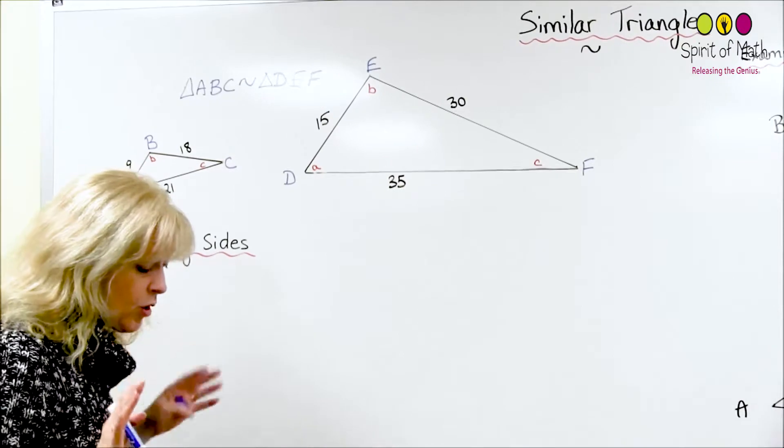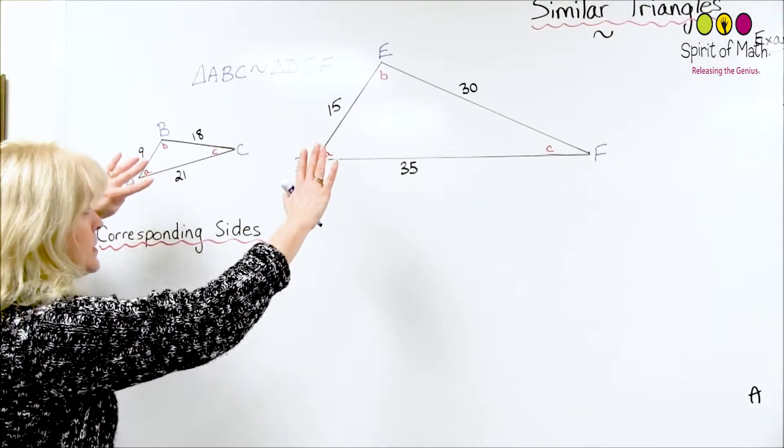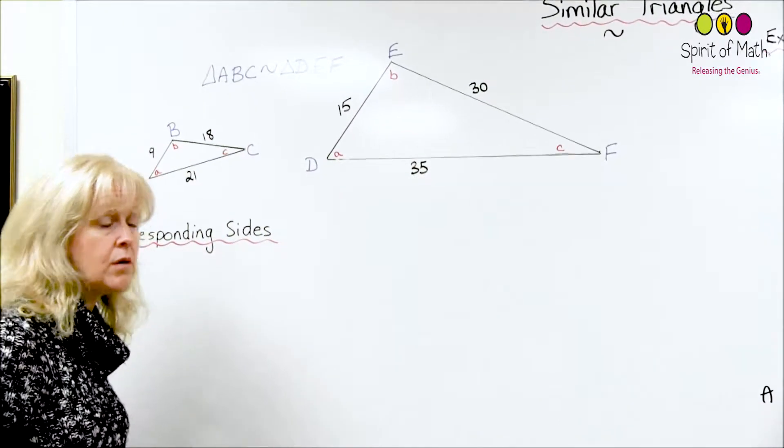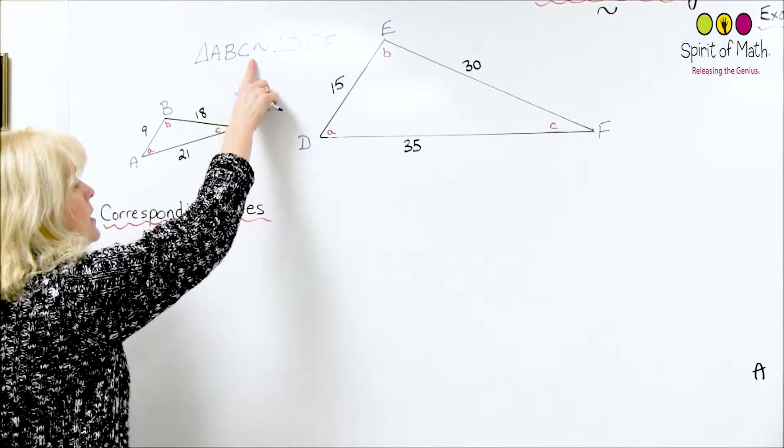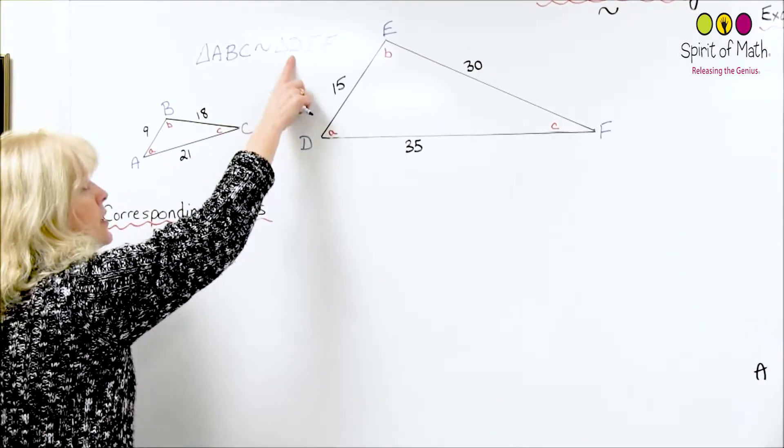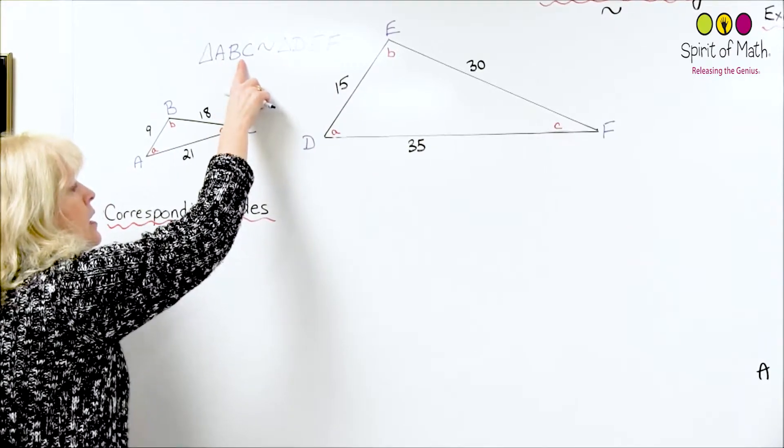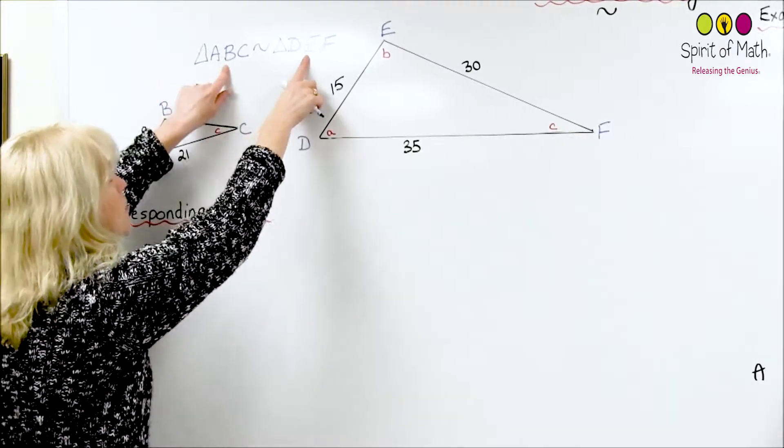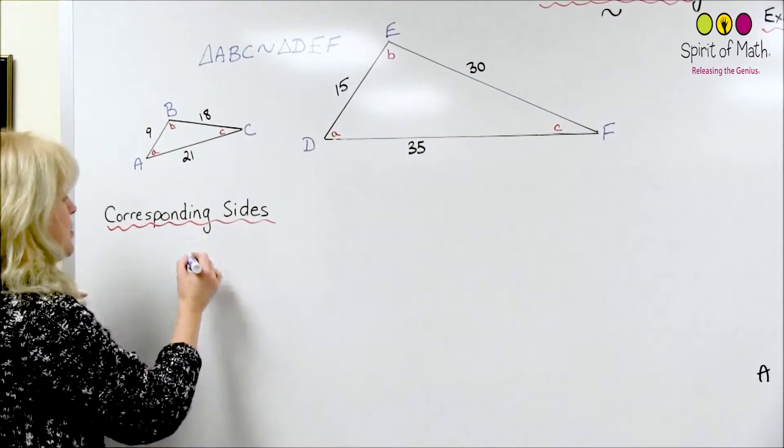Okay, so now, you know how to name that two triangles are similar. You know how to do it properly, so you've got the corresponding sides there now. Now let's look at the corresponding sides. If you have triangle ABC is similar to triangle DEF, then that means side AB is going to be corresponding to side DE. Notice they're in the same order.